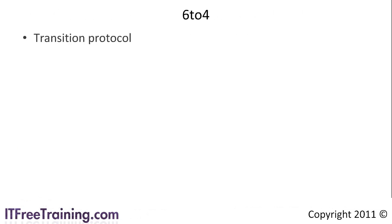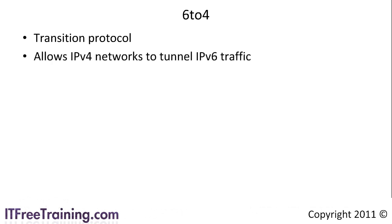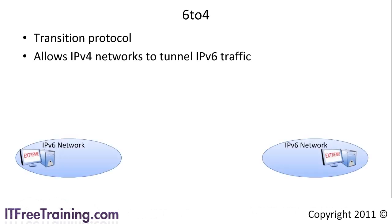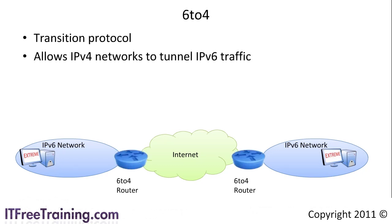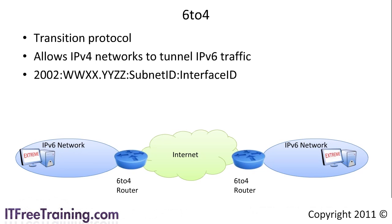6to4 is designed as a transition protocol to help the adoption of IP version 6. It was not developed to be a long-term solution. 6to4 allows existing IP version 4 networks to be used to tunnel IP version 6 traffic. Consider this example: there are two IP version 6 networks and you want to communicate between them. Between them you have the internet, which at this time is mostly IP version 4 with very little IP version 6 routing. To communicate between the two networks, a 6to4 router is used to tunnel the IP version 6 protocol over the internet. To do this, a public IP version 6 address is used. These addresses all start with 2002 followed by the IP version 4 address shown here as W, X, Y, and Z, followed by the subnet ID and interface ID.